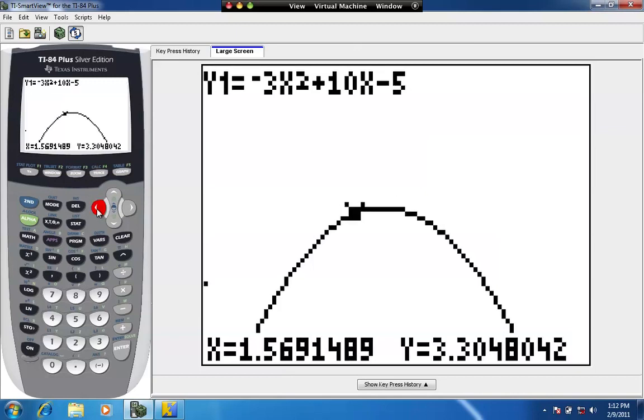So as we trace along the figure, you can see the x and y values at the bottom of the screen change. Those are the ordered pairs that are solutions to this function. Now, let's try to find the maximum point, the height, the highest point of this graph.